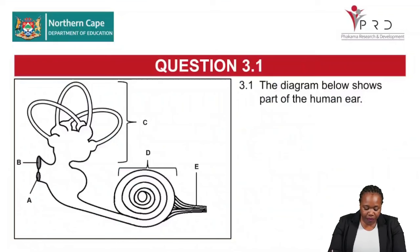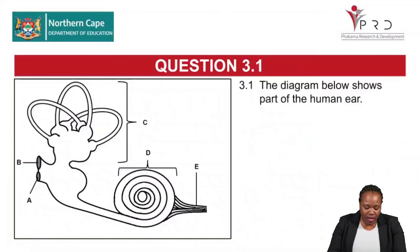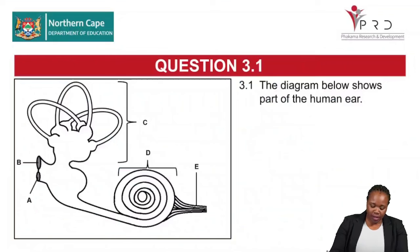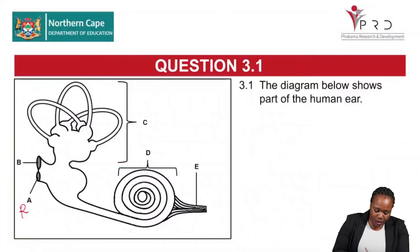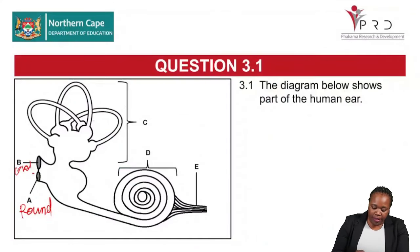Before getting into the questions, be able to label these parts. Part A is the round window, Part B is the oval window, Part C is the semicircular canals.